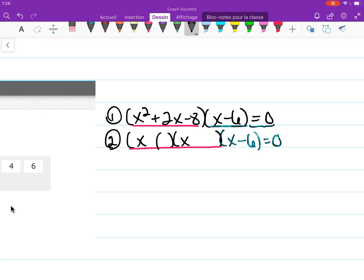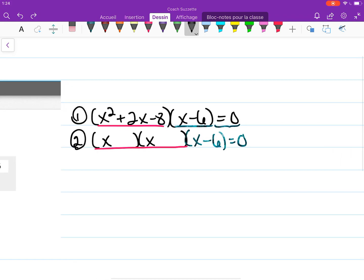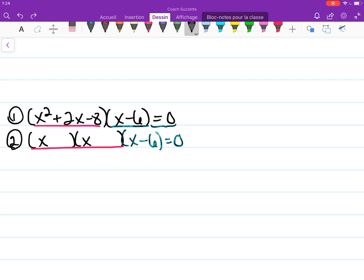So, numbers that go here and here need to be factors of 8 such that when I add them I get 2. What are the factors of 8? We have 1 times 8, 2 times 4.